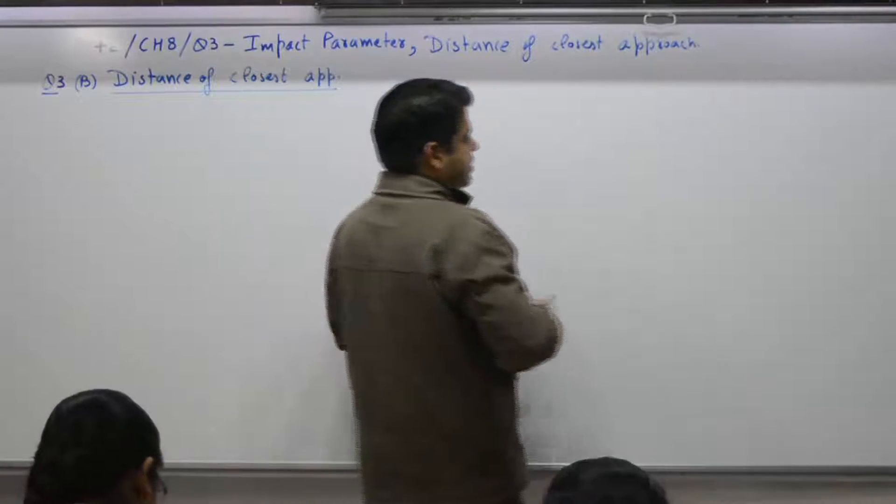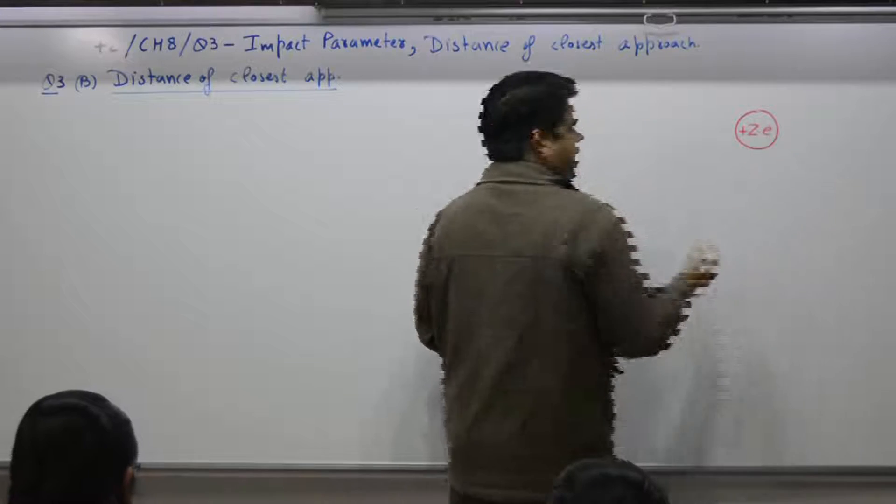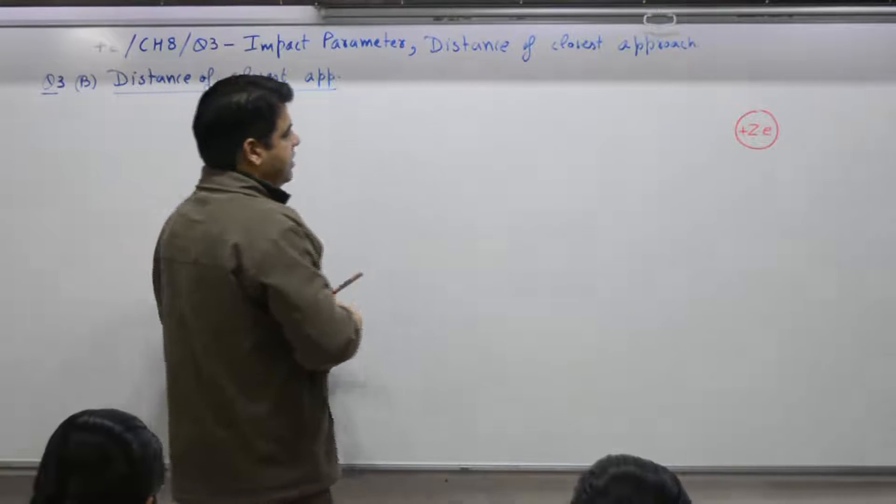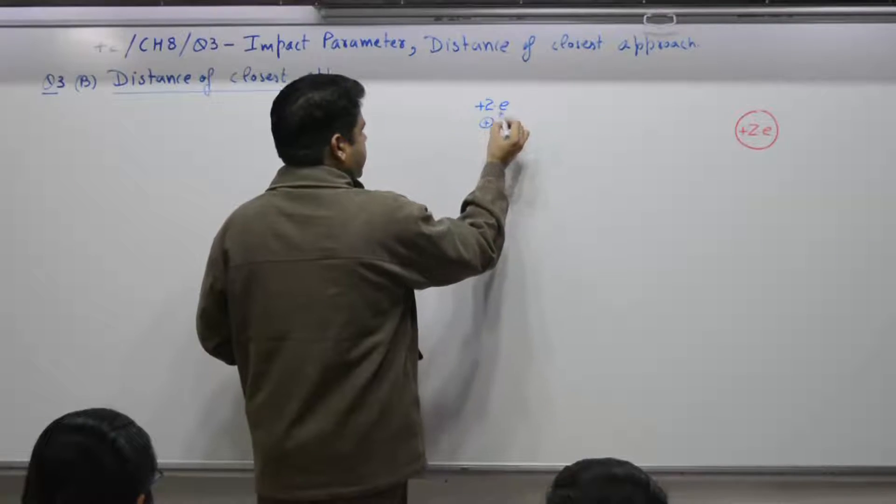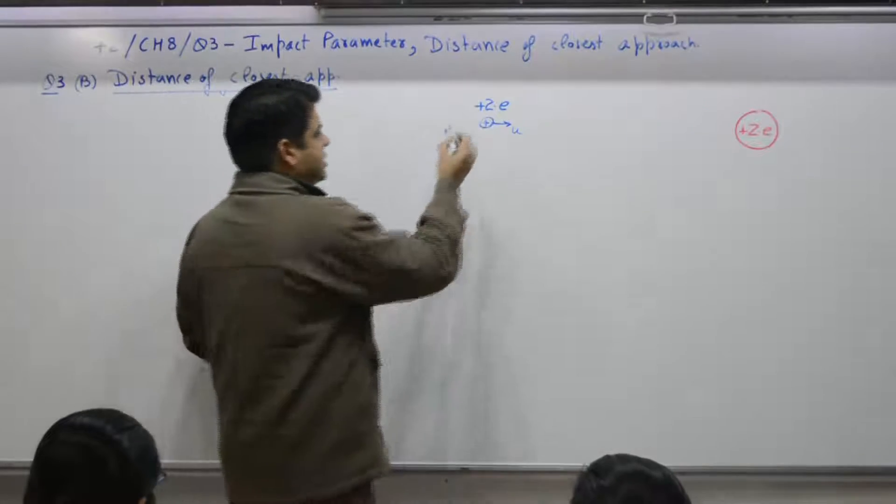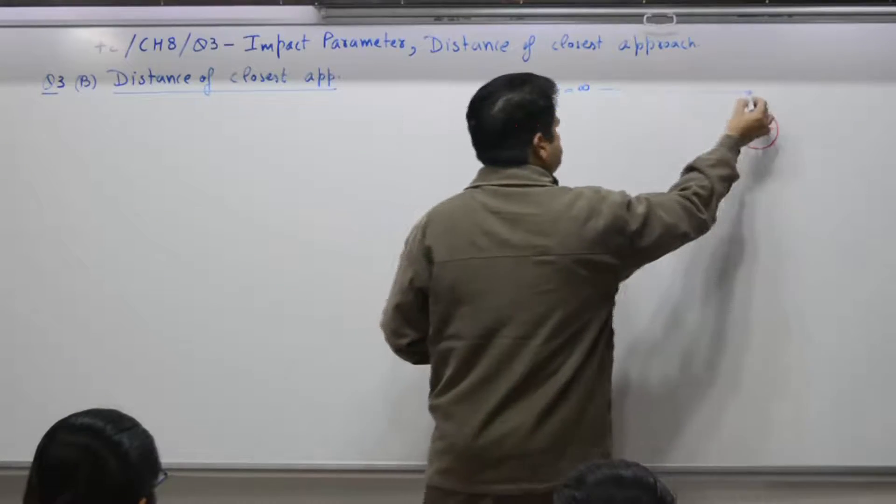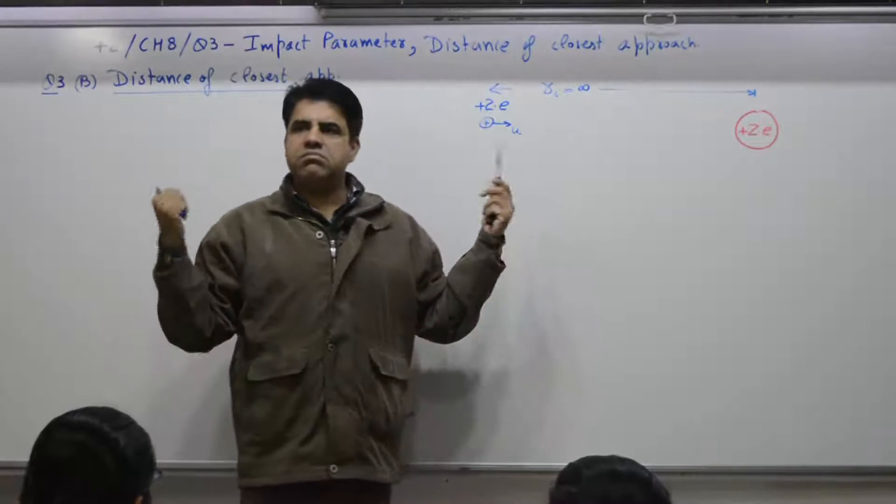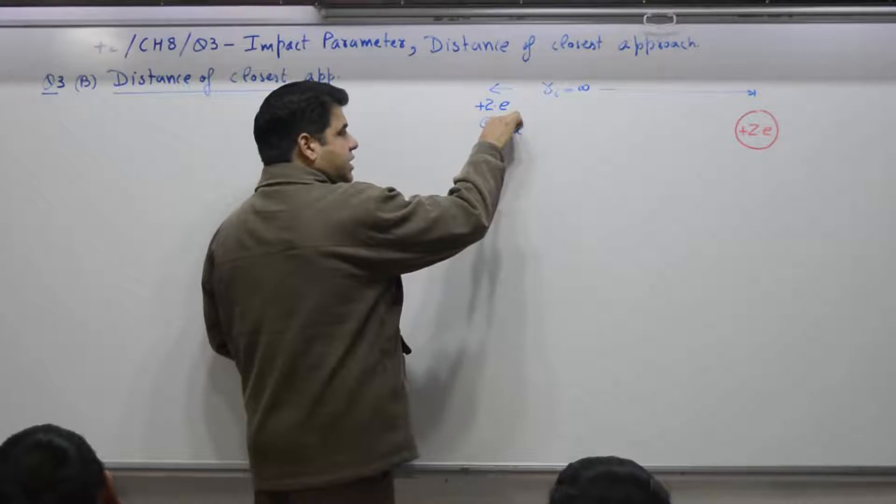Distance of closest approach. What you have is a nuclei with what charge? Plus Ze, that is the number of protons. And you fire one alpha particle, alpha particle is having charge plus, how much? Plus 2E. You fire this with certain speed, say U. This initial distance is infinity. That is very large distance. Infinity means very large in comparison to nuclear dimension. Even if it is few meters, it is infinity.